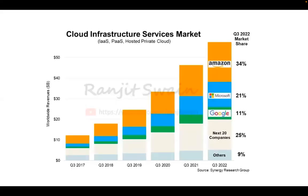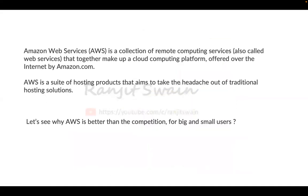If you look at the cloud service market, AWS acquires 34% of the market share as of Q3 2022. Azure is at 21%, Google at 11%, and 25% goes to other cloud providers. AWS — Amazon Web Services — is a collection of remote computing services, web-based services that together make up a cloud computing platform offered over the internet via amazon.com.